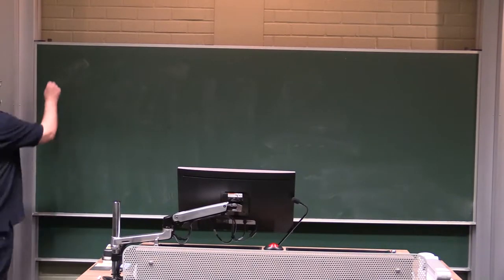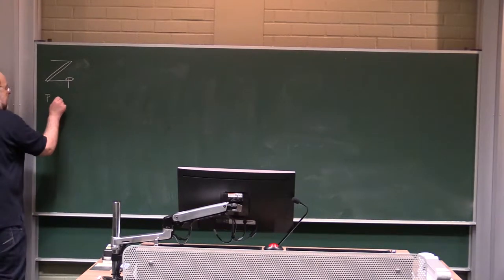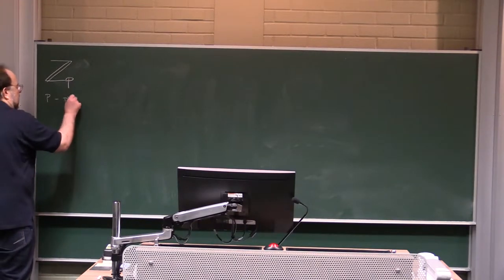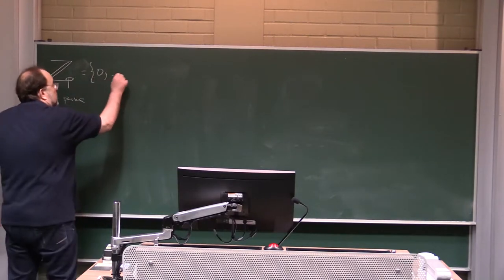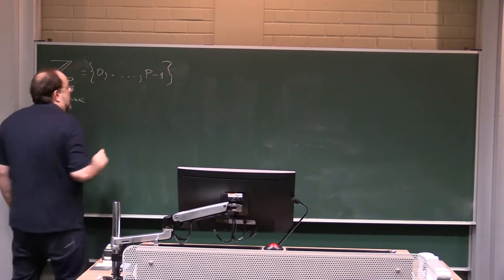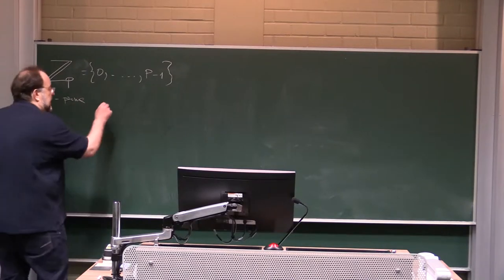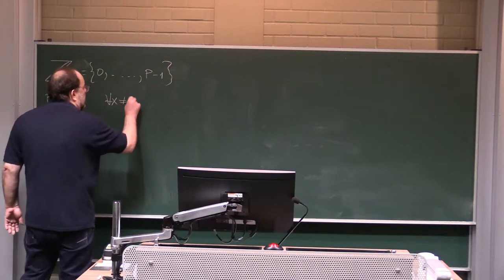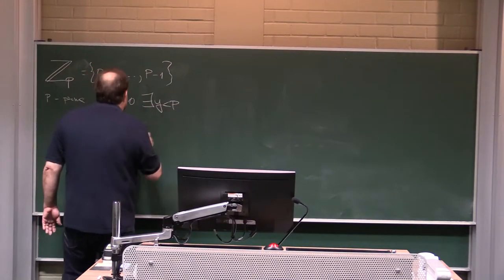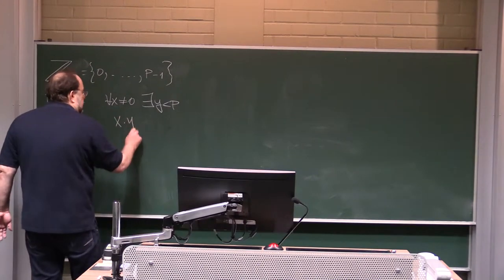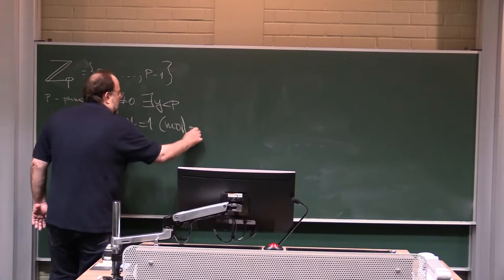In fields, you have to be able to have multiplicative inverse for all non-zero elements. Think of real numbers or complex numbers, or what's the most famous finite field? ZP, or the set of all remainders modulo prime. This set, so it's just 0 to P minus 1 with modular arithmetic, it forms a field, because for all X not equal to 0, there exists Y smaller than P, so that X times Y is equal to 1 mod P.